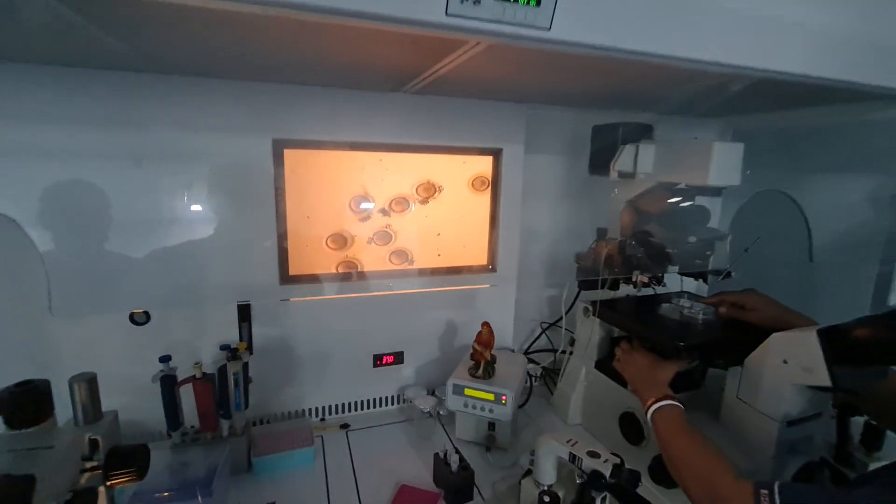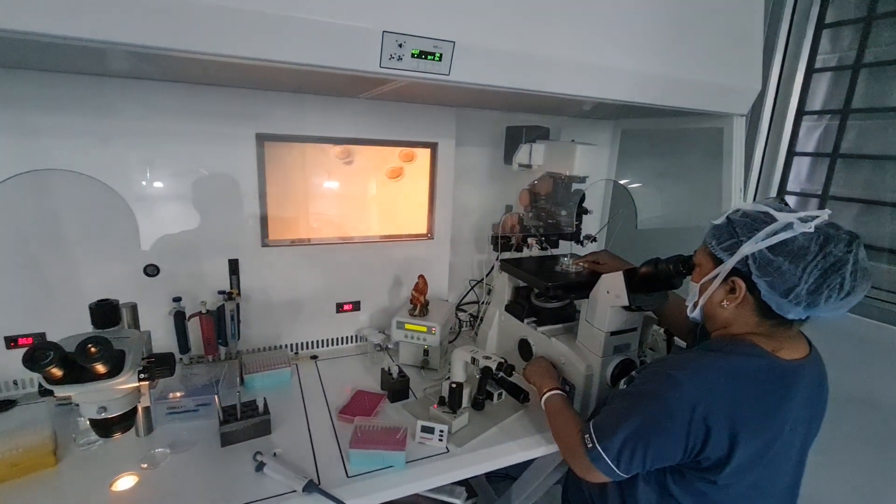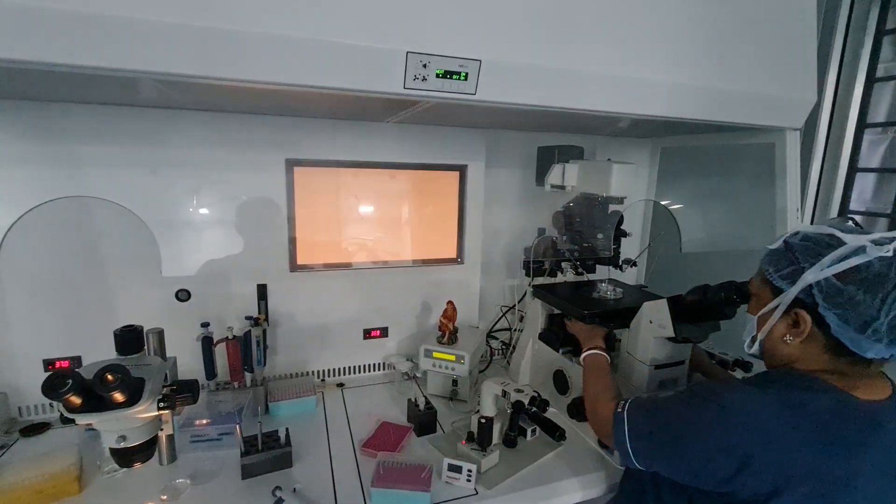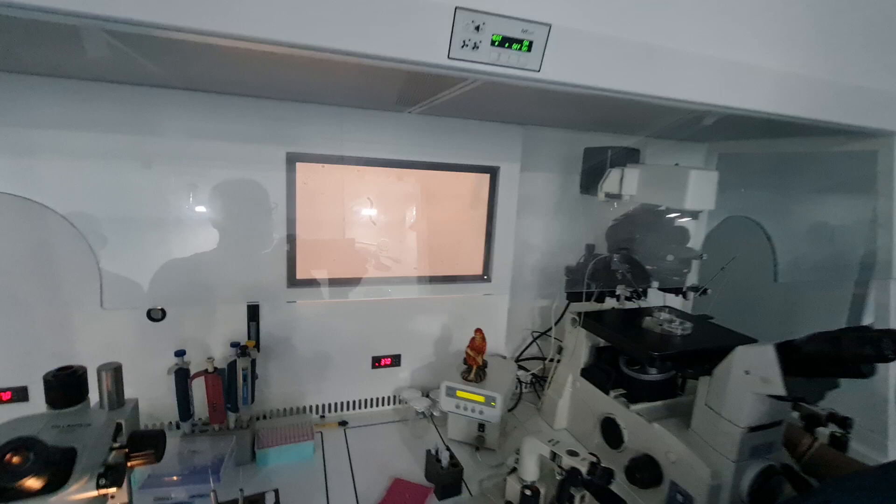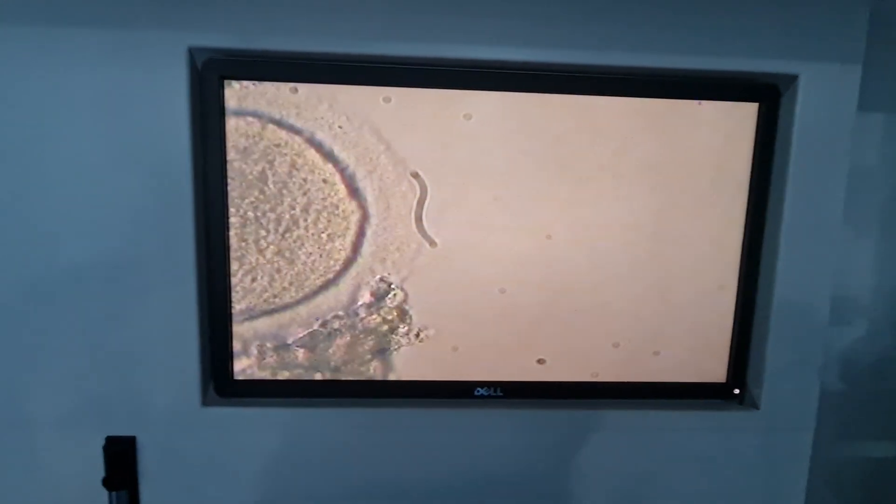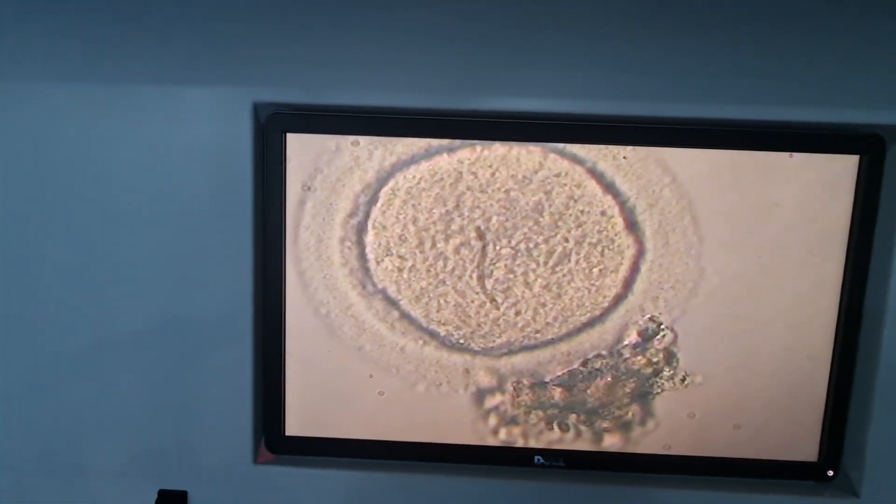Now I will show you the immature oocyte. It looks similar to the M2 oocyte but without a polar body.